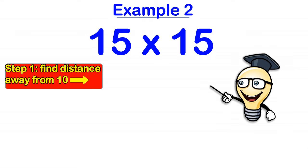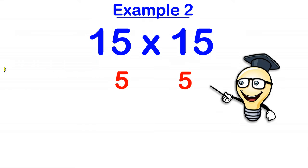Let's take a look at another example. Let's consider 15 times 15. So step 1, we find out how far each number is away from 10. So 15 is 5 away from 10. Same with the other 15.